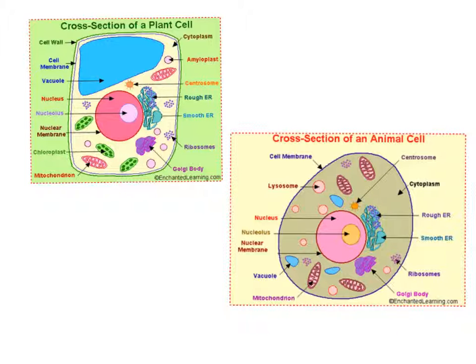The next definition is tissues. A lot of tiny cells of the same type that help make up the human body. An example of tissues would be your muscle tissues.